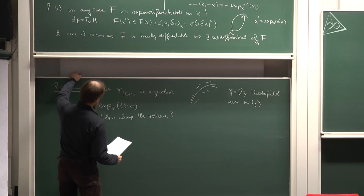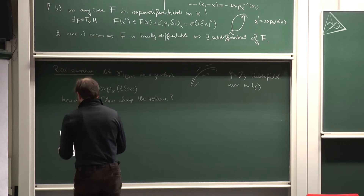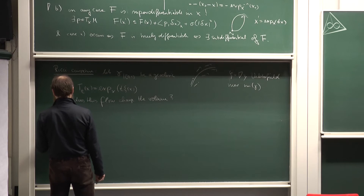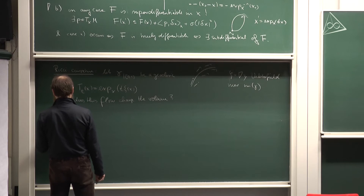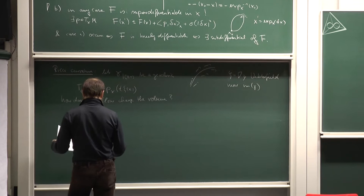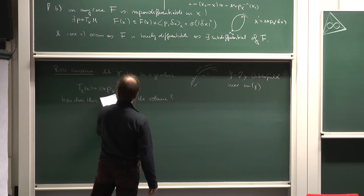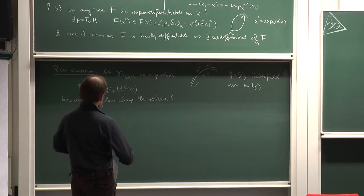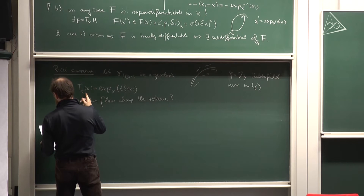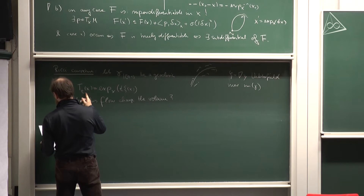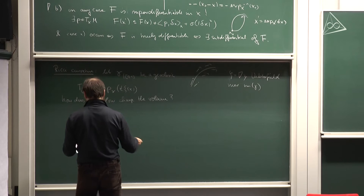The geodesic will be a flow line of the vector field. I look at the following: the time-t map Φ_t(x) is the exponential at x of t·ψ(x). So basically at every point I start a geodesic flow in the direction ψ(x). I'd like to know how this flow changes the volume. I won't become too technical because I hope you've seen calculations of this kind.